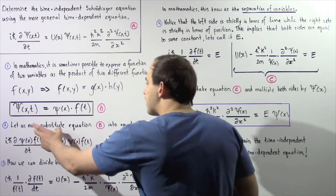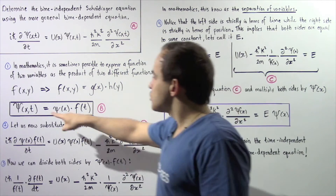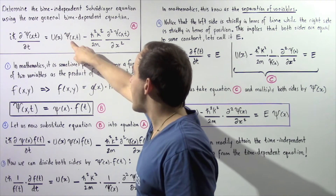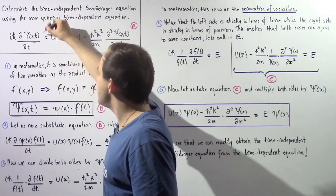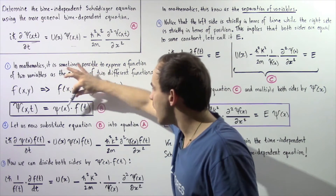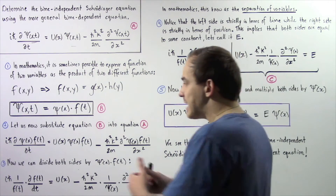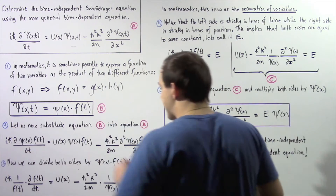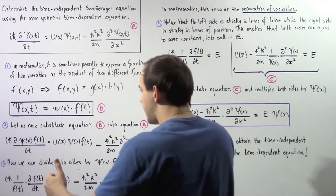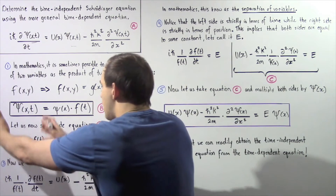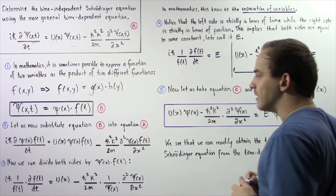Now let's take equation A and substitute equation B into equation A. If lowercase psi equals x, t, we can replace the wave function with the product of these two independent functions. That's exactly what we get in step two. By taking equation B and plugging into equation A, we get the following equation — the left side becomes one form, and the right side becomes another.